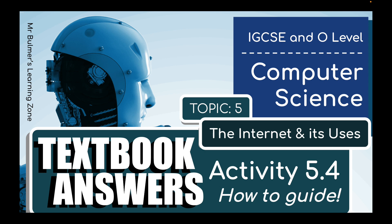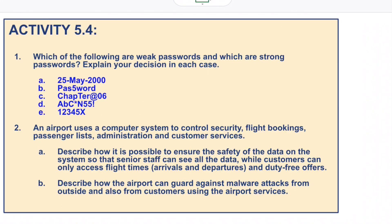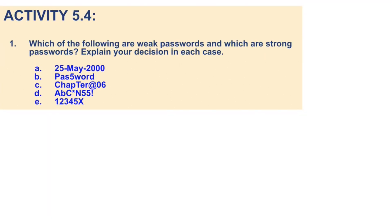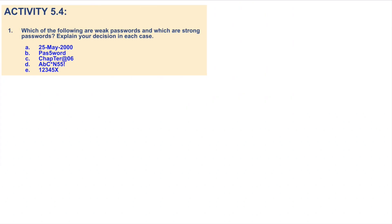Welcome back to Textbook Answers. This time we're going to be moving on to activity 5.4. In this one we've got two questions. First of all, we're going to be looking at weak passwords and identifying the ones between these, 5A to E, and then we're going to be looking at A and B of question 2. Question 1: which of the following are weak passwords and which are strong passwords? Explain your decision in each case.